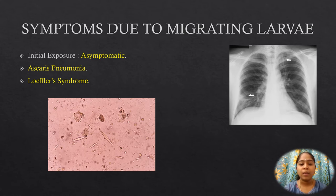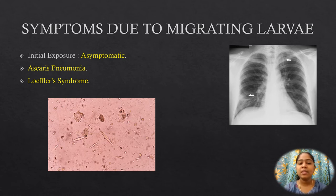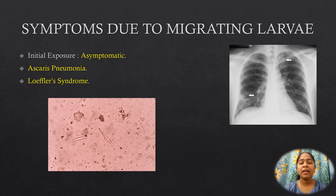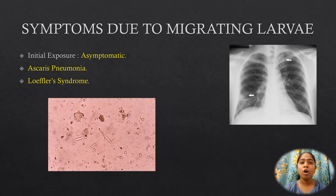Initial exposure to the larva is usually asymptomatic. When re-infection occurs subsequently, there may be intense cellular reaction to the migrating larvae in the lungs, with infiltration of eosinophils, macrophages, and epithelioid cells. This Ascaris pneumonia is characterized by low-grade fever, dry cough, and asthmatic wheezing. On chest radiograph, the sputum may contain Charcot-Leyden crystals, and larvae may be found in sputum but are more often seen in gastric washings. This condition is called Löffler syndrome.